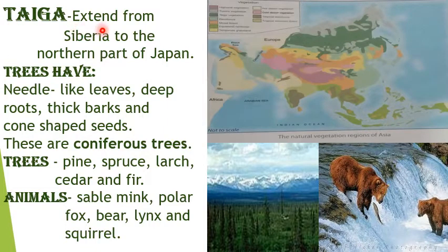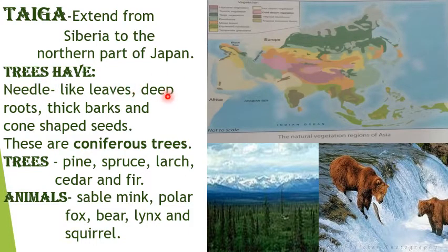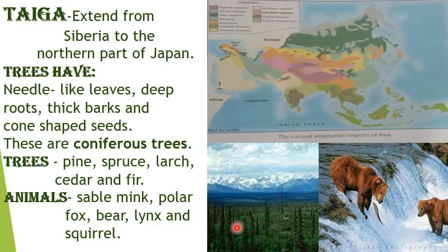The Taiga region extends from Siberia to the northern part of Japan. Trees have needle-like leaves, deep roots, thick bark and cone-shaped seeds, known as coniferous trees. Species of trees are pine, spruce, larch, cedar and fir.